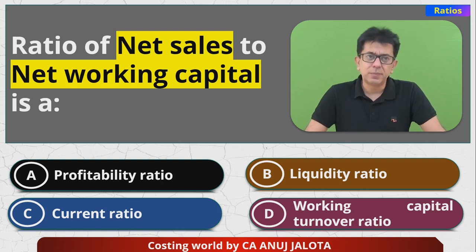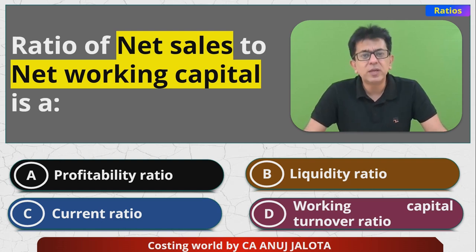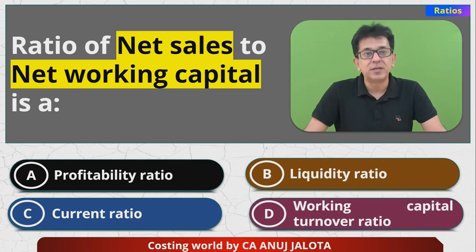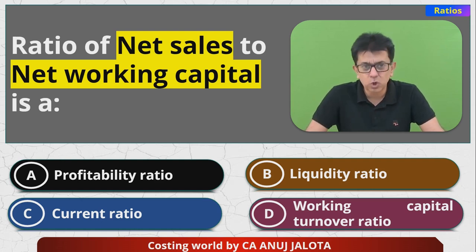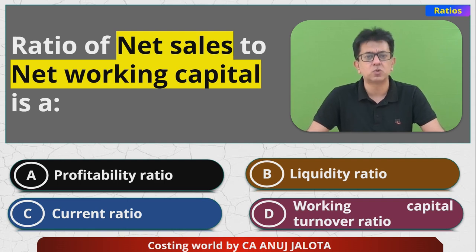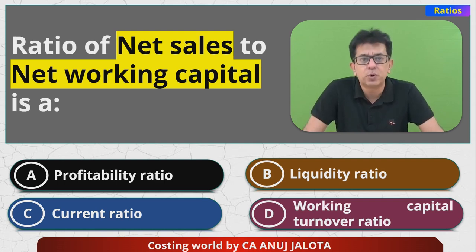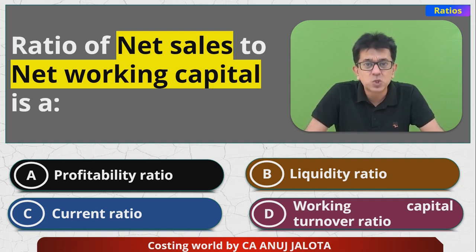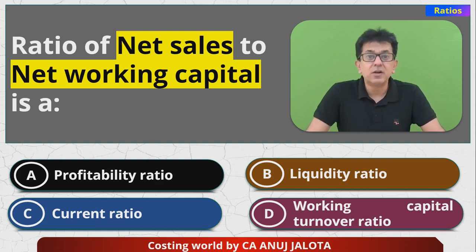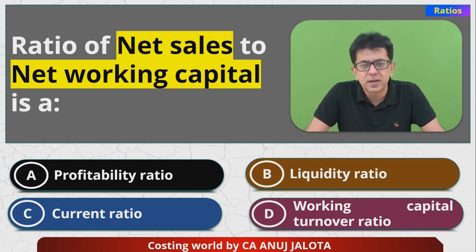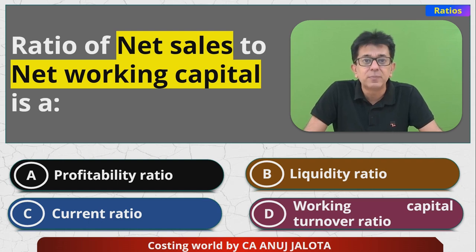Time is up. The ratio of net sales to net working capital — let's explore the options. Option A, profitability ratio: profitability ratios should speak of profit, but in net sales and net working capital there is no profit, so that's not correct. Option B, liquidity ratio: that is quick assets upon quick liabilities — not what the question is asking. Option C, current ratio: that's current assets upon current liabilities — also not what the question is asking.